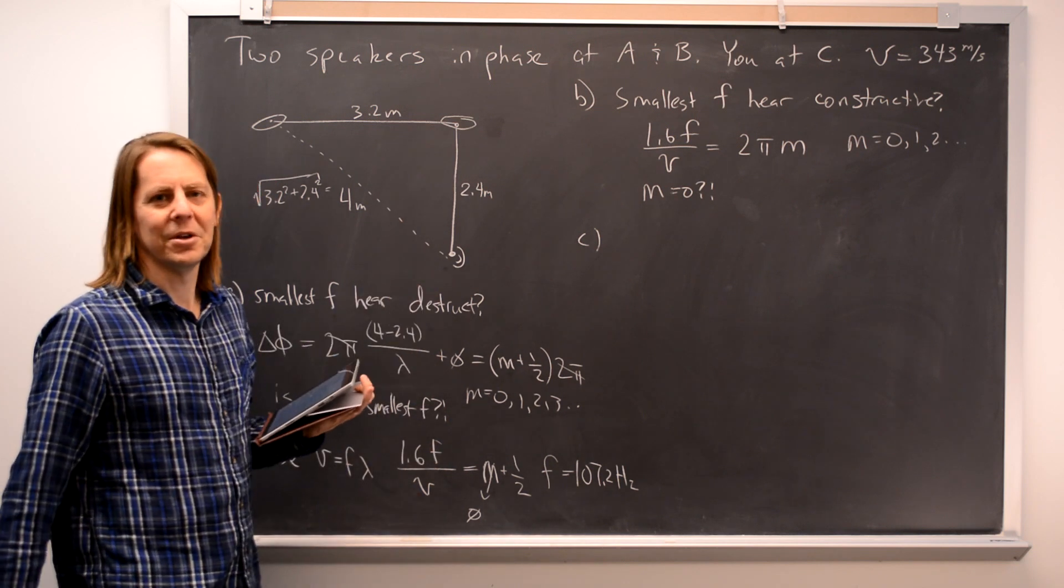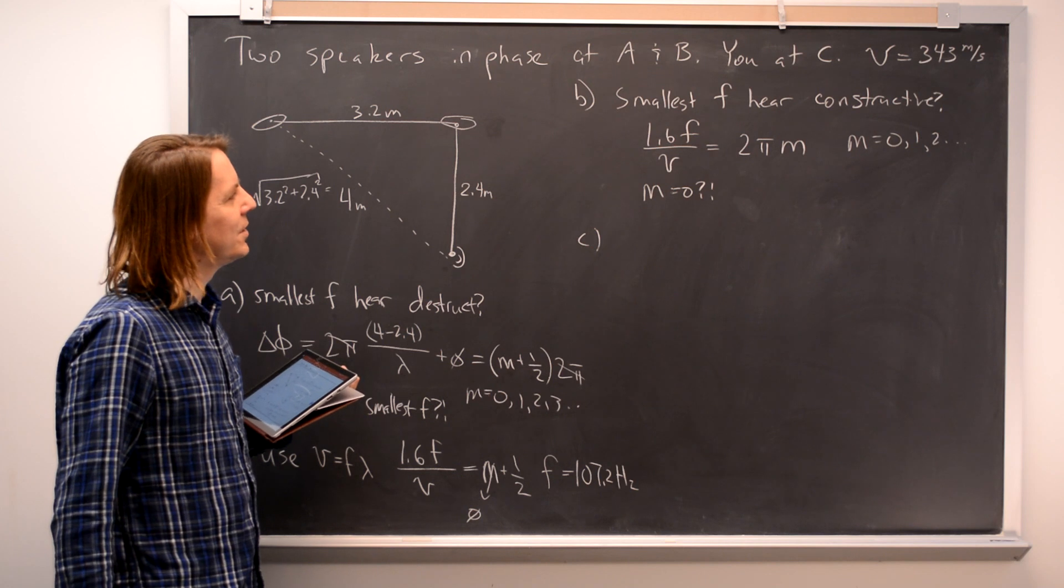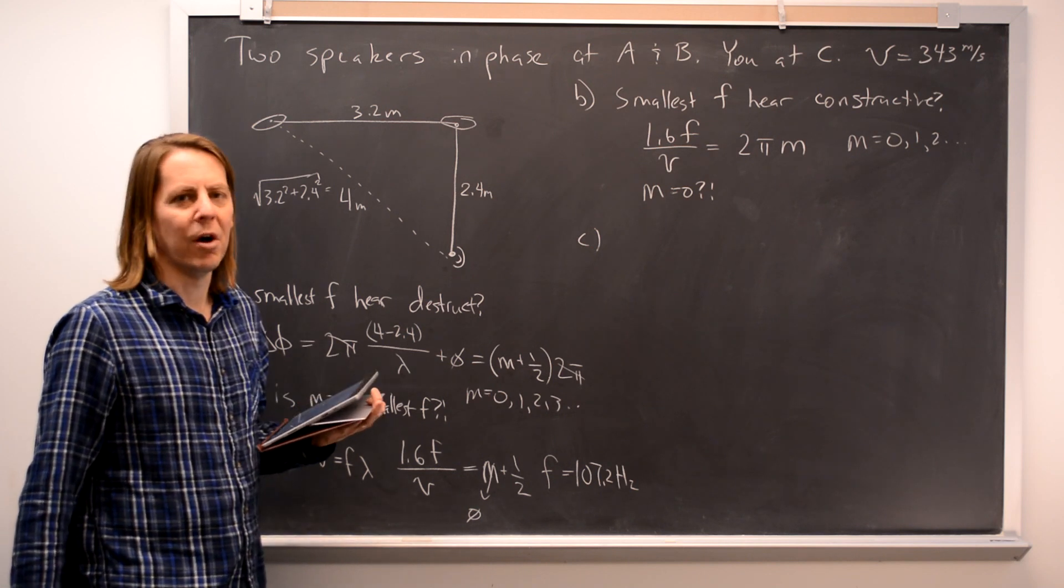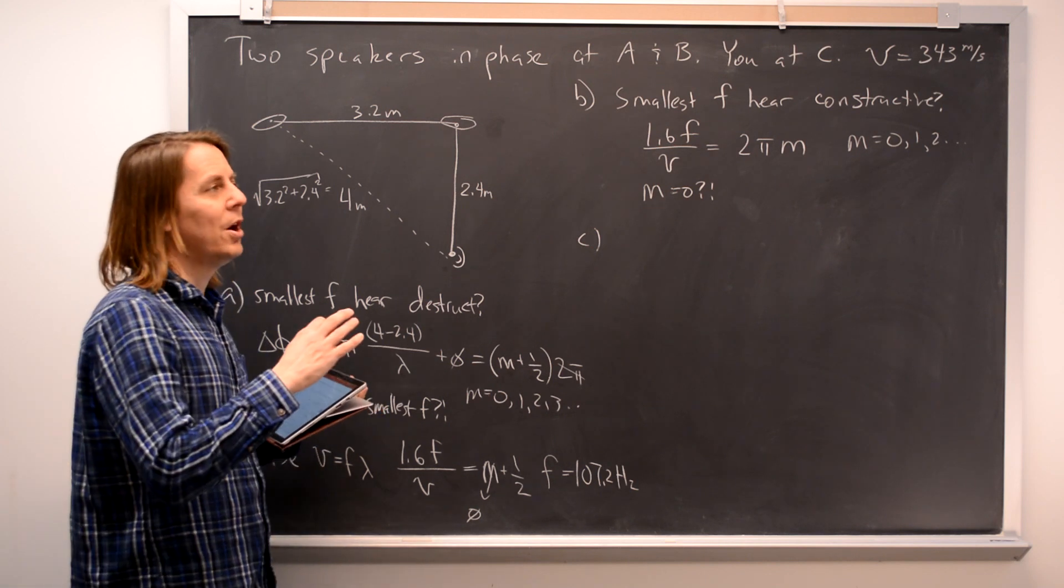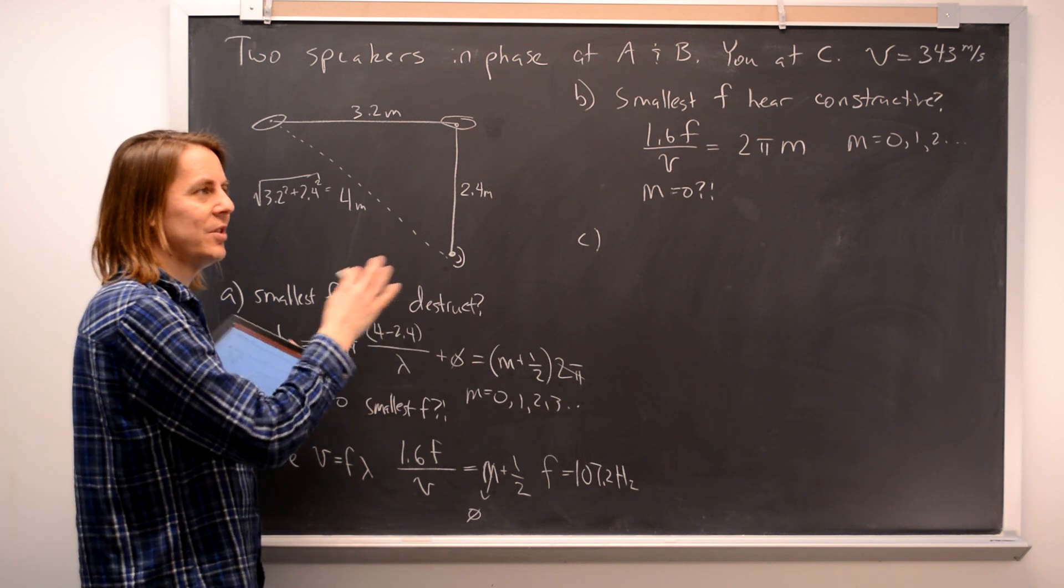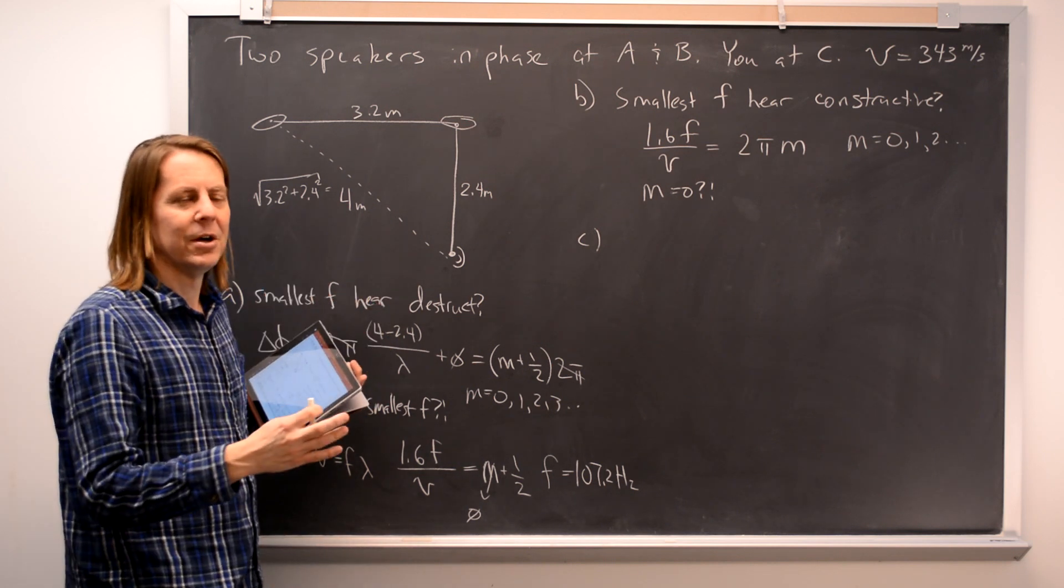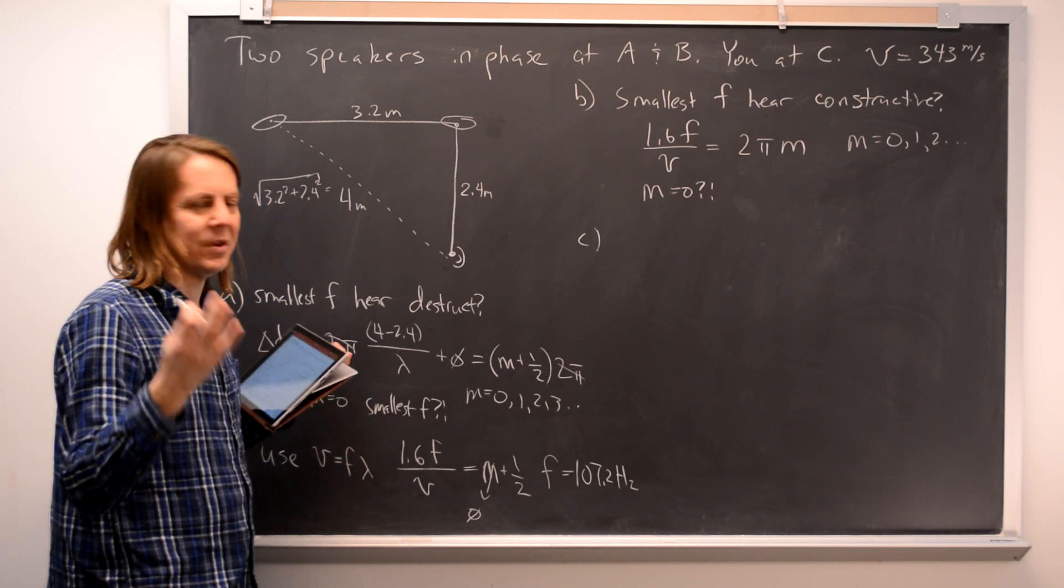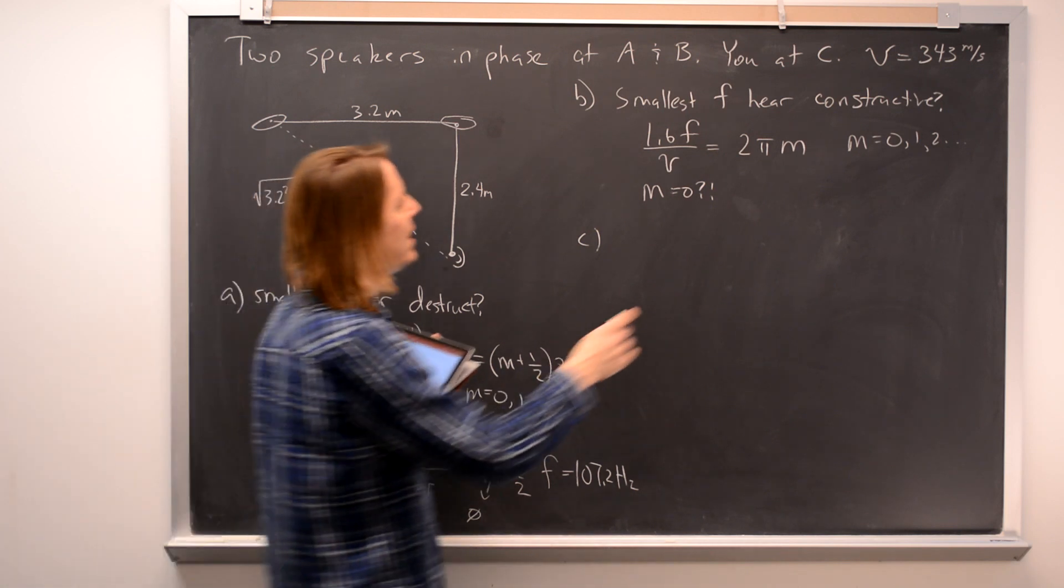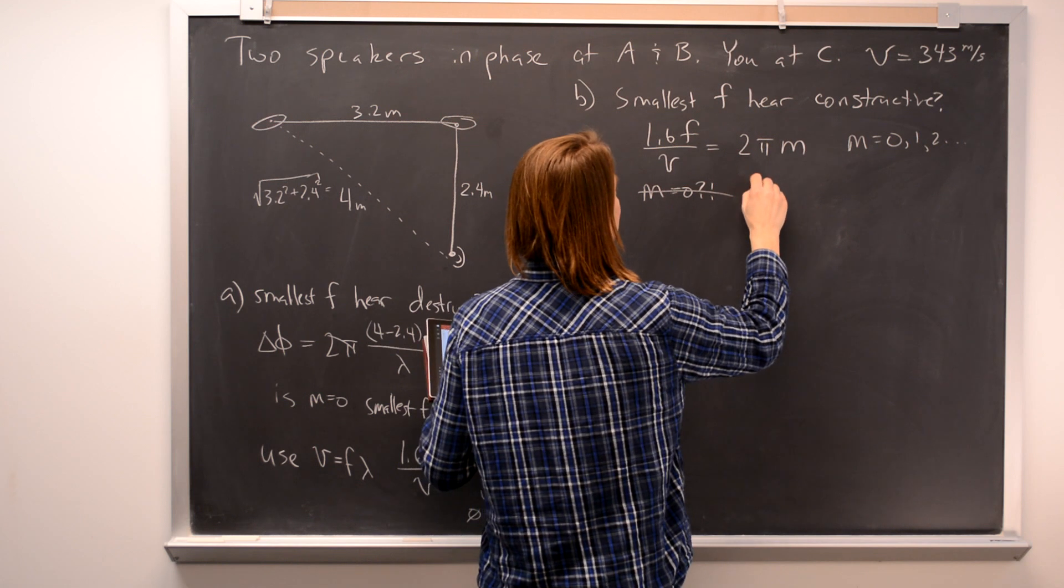Well, the smallest F would be M equals 0. But is that okay? Because that would be F equals 0. Nothing is happening. You're not going to hear anything constructive if the speaker is off. So this is actually why we don't count the 0. You really can't use M equals 0 in this case. You have to go to M equals 1.